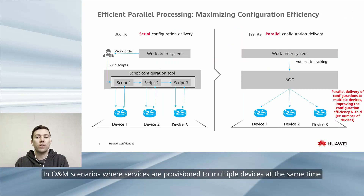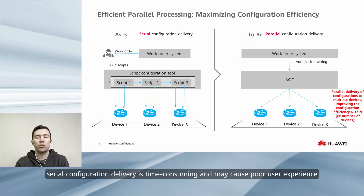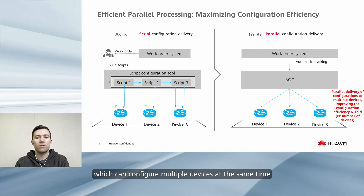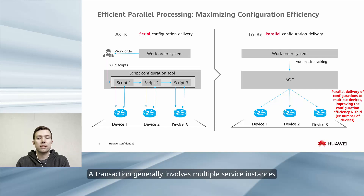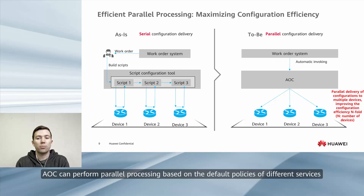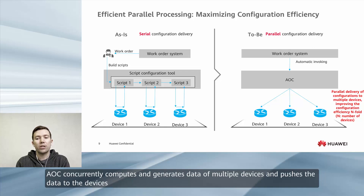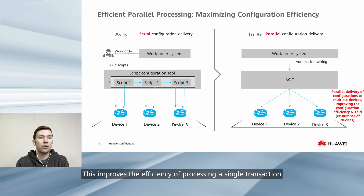In O&M scenarios where services are provisioned to multiple devices at the same time, serial configuration delivery is time-consuming and may cause poor user experience. AOC offers parallel processing capabilities which can configure multiple devices at the same time. If any operation fails, you can roll back configurations as required. The configuration time will not linearly increase with the number of devices. A transaction generally involves multiple service instances, and AOC can perform parallel processing based on the default policies of different services. When committing configuration data, AOC concurrently computes and generates data for multiple devices and pushes the data to the devices, improving the efficiency of processing a single transaction.